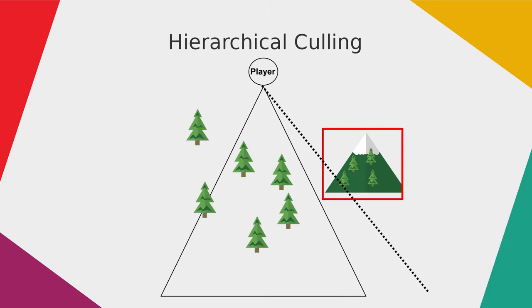In another example, the view frustum cuts the mountain bounding volume, so it needs to check all child objects inside the mountain bounding volume. The algorithm finds that one of the trees is cut by the view frustum and is not completely in or outside it, so it checks each polygon inside that tree's 3D model. If a polygon is also cut by the view frustum, then it starts the clipping algorithm.